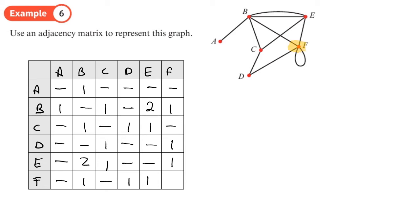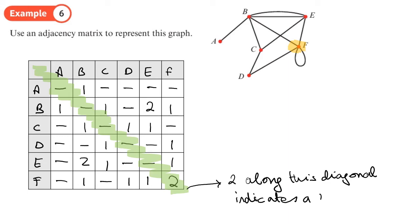So we're just left straight now to F. All the other connections have been filled in. The only thing is, between F and itself, there's a loop, so there's 2. So whenever we get a number 2 anywhere along here, it indicates a loop. So 2 along this diagonal indicates a loop.